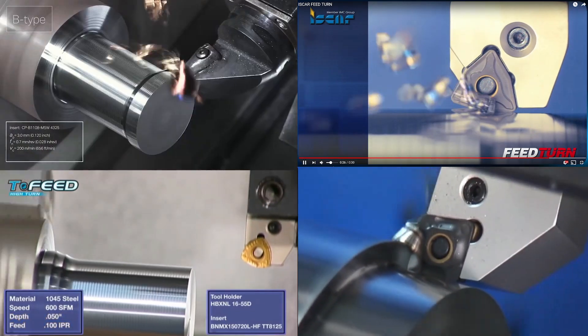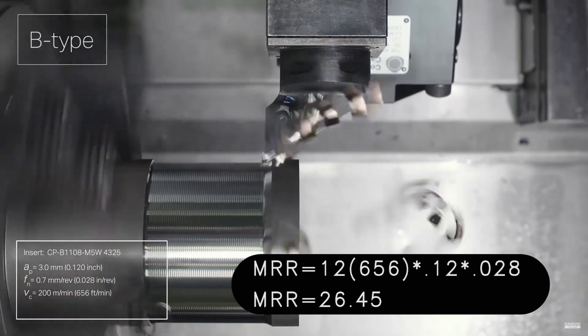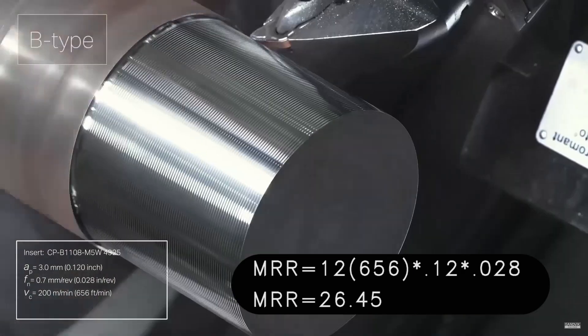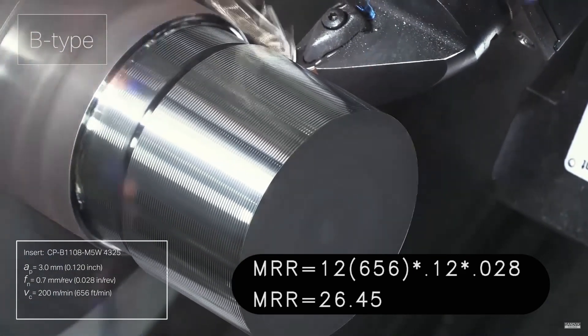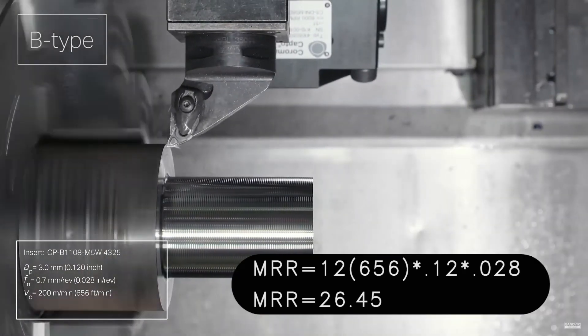First off we've got Prime Turning by Sandvik, and based on the stats that they gave, this is doing a metal removal rate of 26.45, which is pretty good.